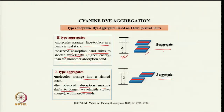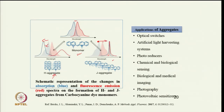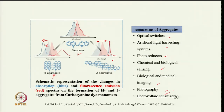H aggregates have absorption at shorter wavelength than the monomer, whereas J aggregates have absorption at longer wavelength with a narrow band. The blue curve is absorption and the red one is fluorescence emission. H aggregates and J aggregates have several applications: optical switches, artificial light harvesting systems, photo reducers, chemical and biological sensing, biological and medical imaging, photography, and photovoltaic sensitizers.